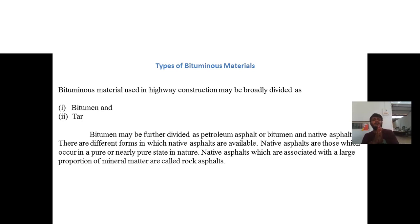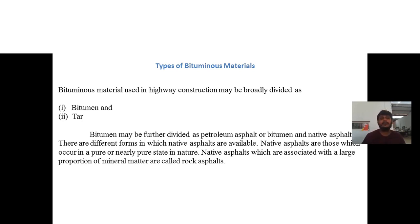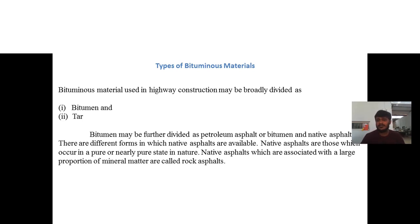Bituminous material is one of the major binding materials extensively used in highway construction. It is broadly classified as bitumen and tar. Bitumen may be further divided as petroleum asphalt or bitumen and native asphalt. Native asphalts are those which occur in pure or nearly pure state in nature.